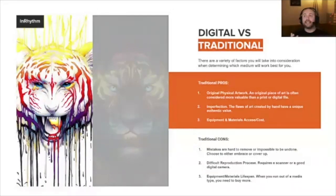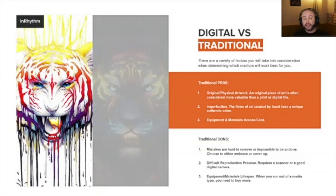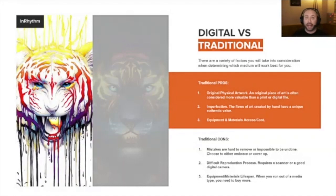Traditional art has a life of its own, and a lot of that is due to its imperfections — whatever makes it unique is where people find additional value. Another pro is being able to make art out of things that aren't digital — it could be anything around the house, a pen and paper, or Play-Doh. Most of the time that stuff is a little less expensive; a mechanical pencil and a sketchpad can run you about 10 bucks.